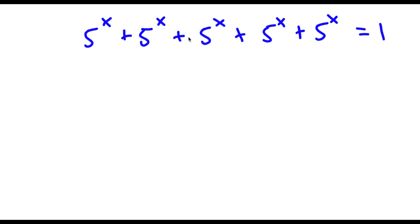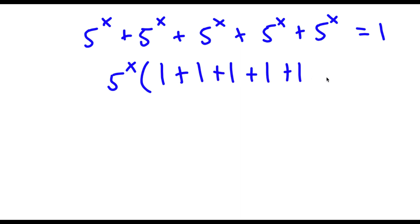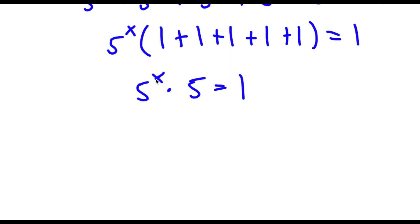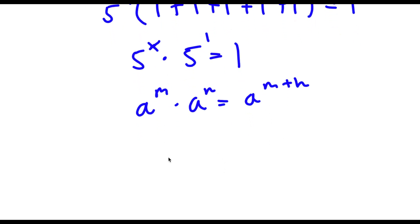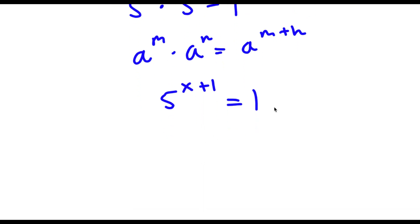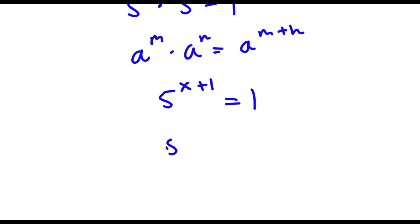Alright, so I have 5 to the power of x plus 5 to the power of x plus 5 to the power of x plus 5 to the power of x plus 5 to the power of x is equal to 1. The first thing I'm going to do is factor out 5 to the power of x. So 5 to the power of x times 1 plus 1 plus 1 plus 1 plus 1 equals 1, which simplifies to 5 to the power of x times 5 equals 1. Now 5 here is the same thing as 5 to the power of 1, and using the product rule, 5 to the power of x times 5 to the power of 1 equals 5 to the power of x plus 1. This equals 1, and 1 is the same thing as 5 to the power of 0 since anything to the power of 0 equals 1.